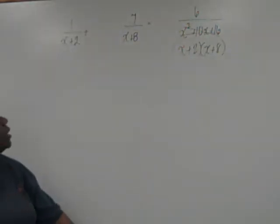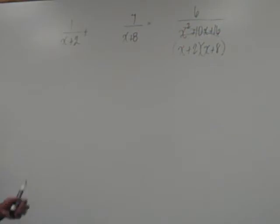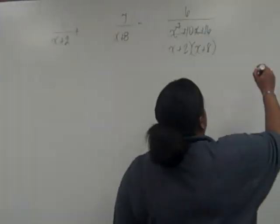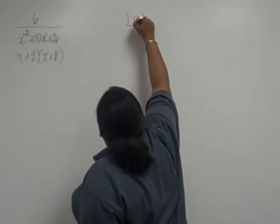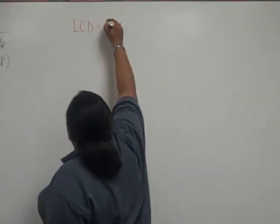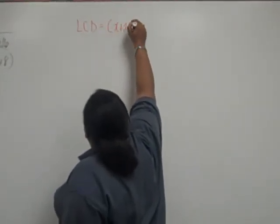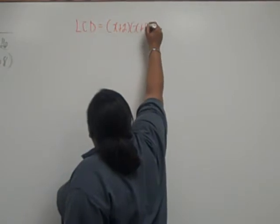Now that all three denominators have been factored, we can identify the LCD. The LCD is equal to x plus 2 times x plus 8.